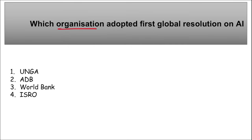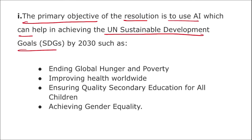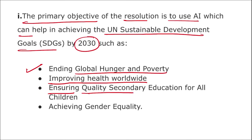Next: which organization adopted the first global resolution on artificial intelligence? The United Nations General Assembly (UNGA) unanimously adopted the first global resolution on AI that will safeguard human rights, protect personal data, and monitor AI for risks. The primary objective of this resolution is to use AI to help achieve the UN Sustainable Development Goals by 2030 — goals such as ending global hunger and poverty, improving health worldwide, ensuring quality education for all children, achieving gender equality — and to remove the digital divide between rich developed countries and poor developing countries.